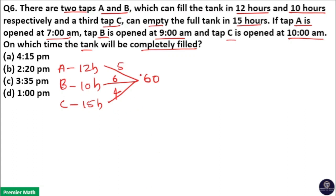Now, this diagram means 60 liters is the capacity of the tank and A's efficiency is 5, B's efficiency is 6, C's efficiency is 4. That means A can fill 5 liters in 1 hour, B can fill 6 liters in 1 hour, C can empty 4 liters in 1 hour. Here, A and B fill the tank and C is emptying the tank.